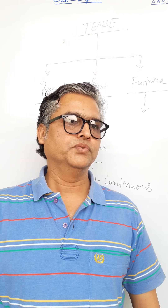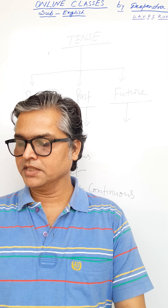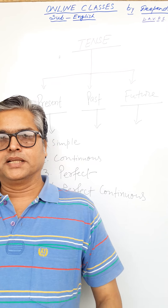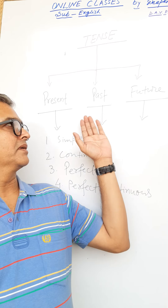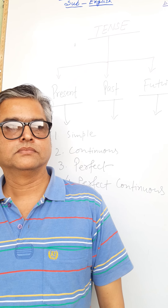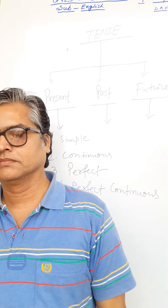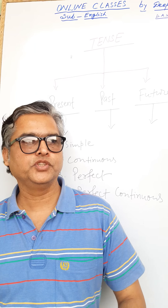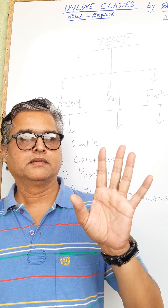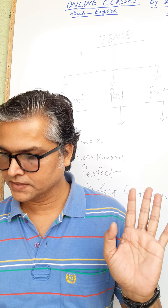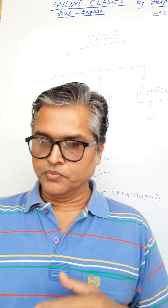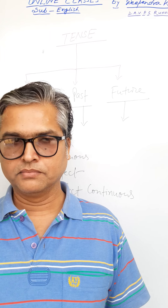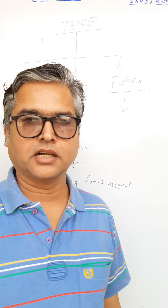A verb that refers to present time is called present tense. A verb that refers to past time is called past tense. A verb that refers to future time is called future tense. We have to understand it with the help of examples.